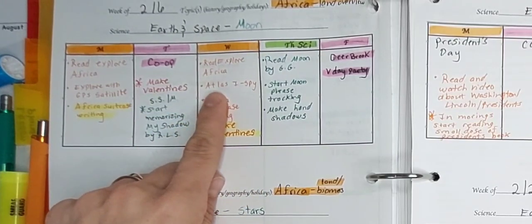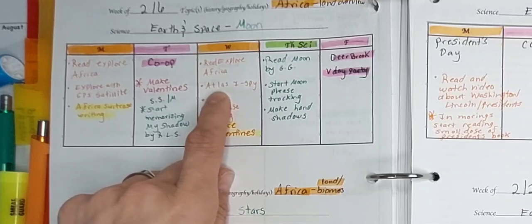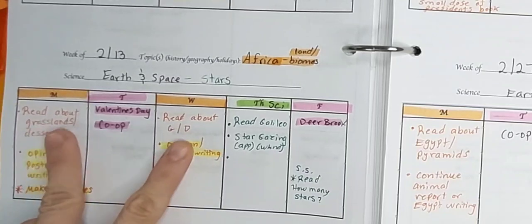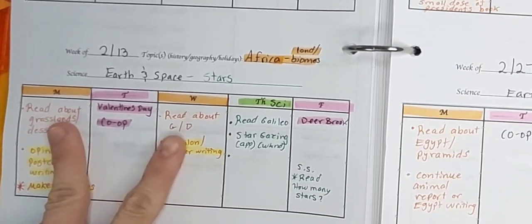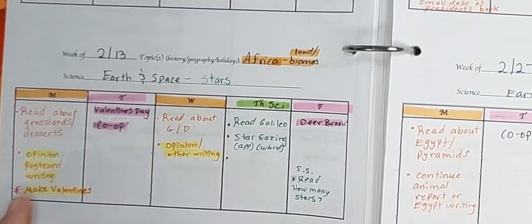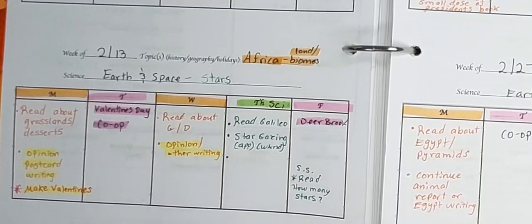But today, instead of doing the GPS, that day, we'll open up the Atlas to the Africa page and play I Spy. And then the next week for our Africa or history unit study is instead of just focusing the land as an overview, we're going to focus in on one or two biomes. He can choose between grasslands and deserts that we'll read about. Then we'll do an opinion postcard. He gets like a little pretend postcard and he can write his opinion about one aspect.